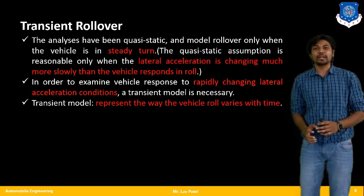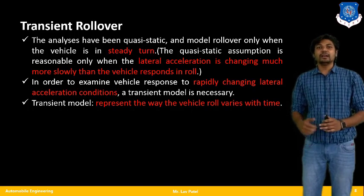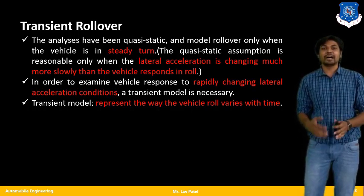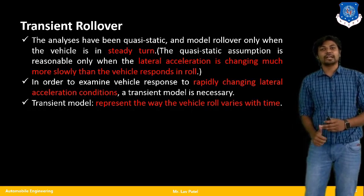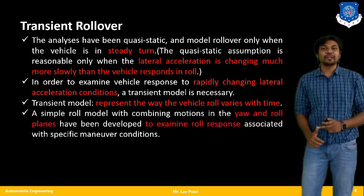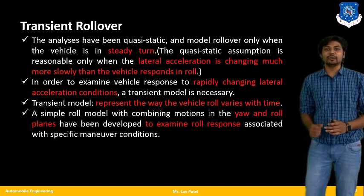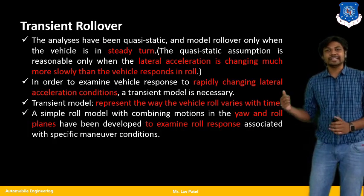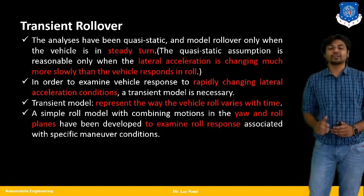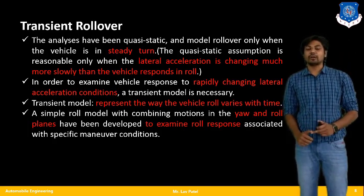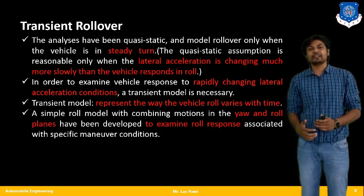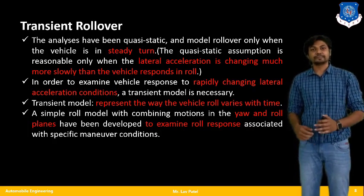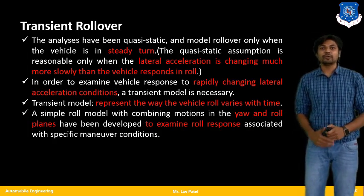The transient model represents the vehicle rolling condition with varying time — if I change my time, how does rolling get affected. A simple roll model combining yaw and roll dynamics has been developed to examine the roll response associated with specific maneuver conditions. These are the key points for transient rollover. So that is all about this chapter on rollover — covering rollover types, quasi-static analysis for rigid and suspended systems, and transient rollover. Thank you.